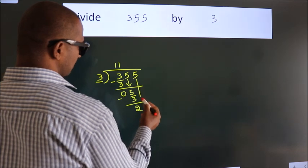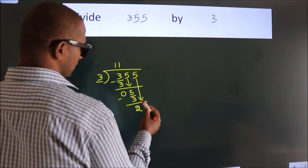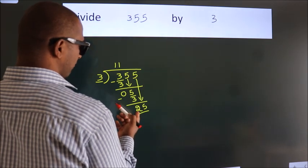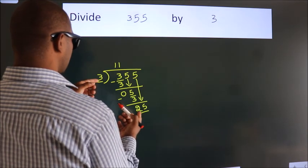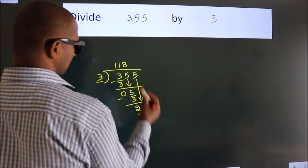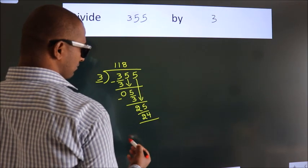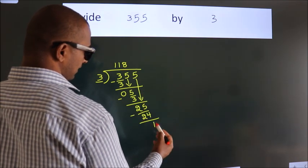After this, bring down the beside number. So 5 down. So 25. A number close to 25 in 3 table is 3 8s 24. Now, we subtract. We get 1.